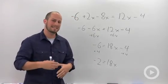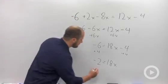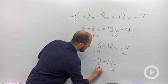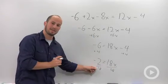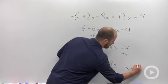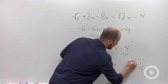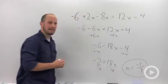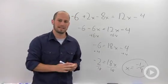And to get the x by itself, lastly, we just divide. Divide by 18. Negative 2 over 18 can be simplified to negative 1 over 9. And there you go. We just solved this simple linear equation.